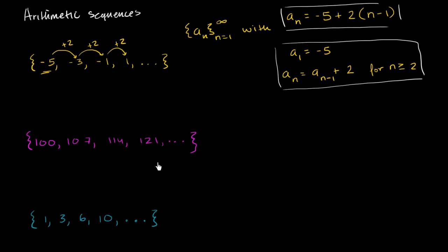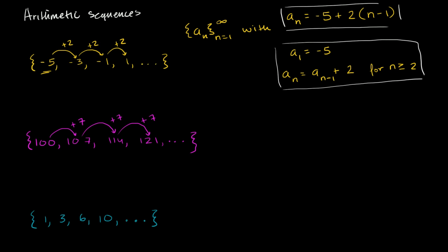Now let's look at this next sequence. Is this one arithmetic? We go from 100, adding 7 to get 107; from 107 to 114, adding 7; from 114 to 121, adding 7. So this is indeed an arithmetic sequence.